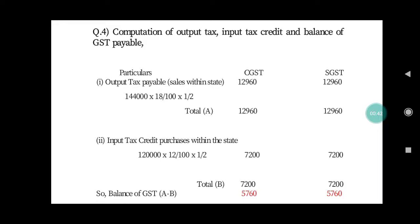Please understand the word 'balance of GST payable'. First we have to find the output tax, then the input tax credit. Once we deduct input tax from output tax, we get the GST payable. So first, let's take the output tax — that is sales within the state.